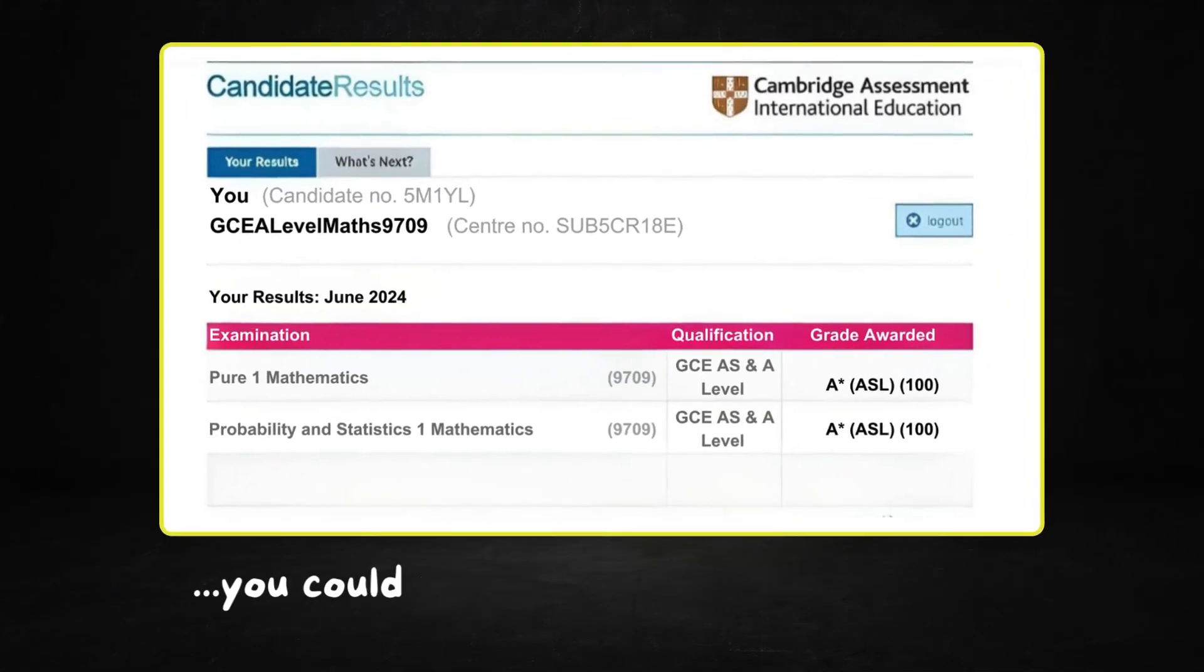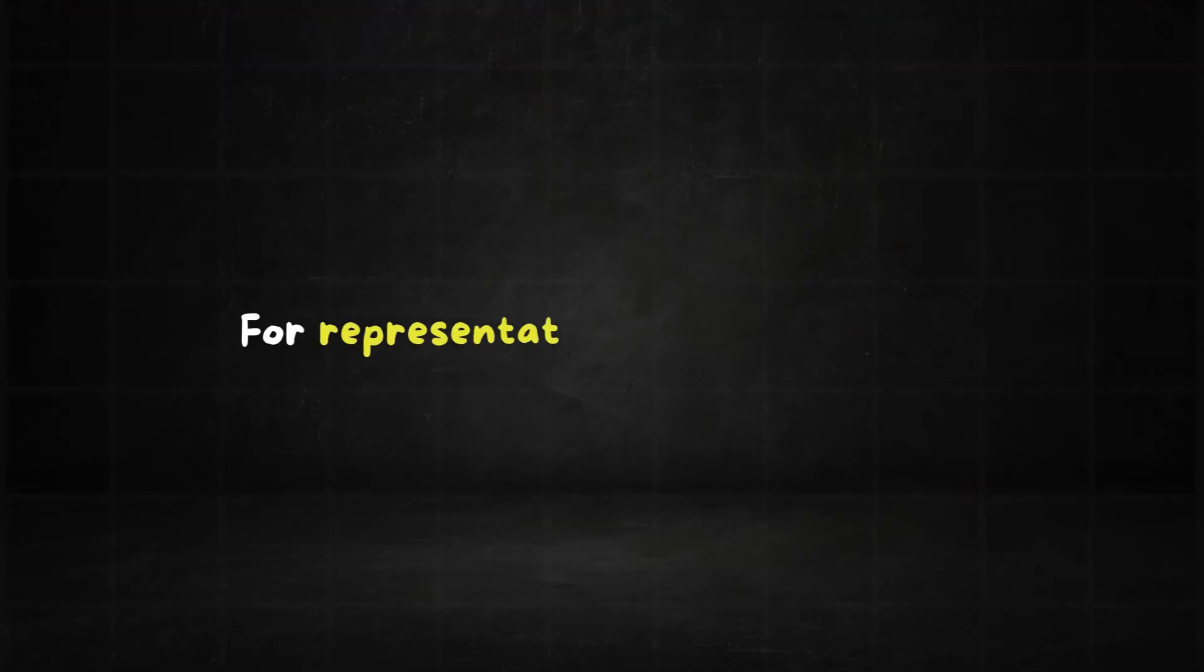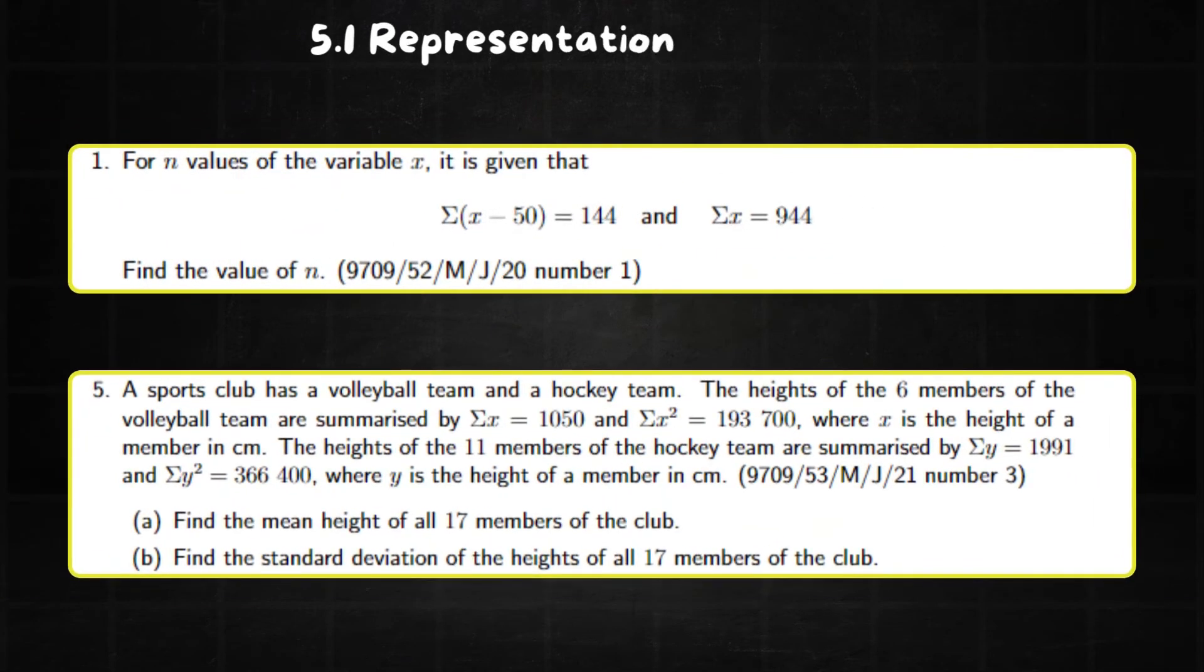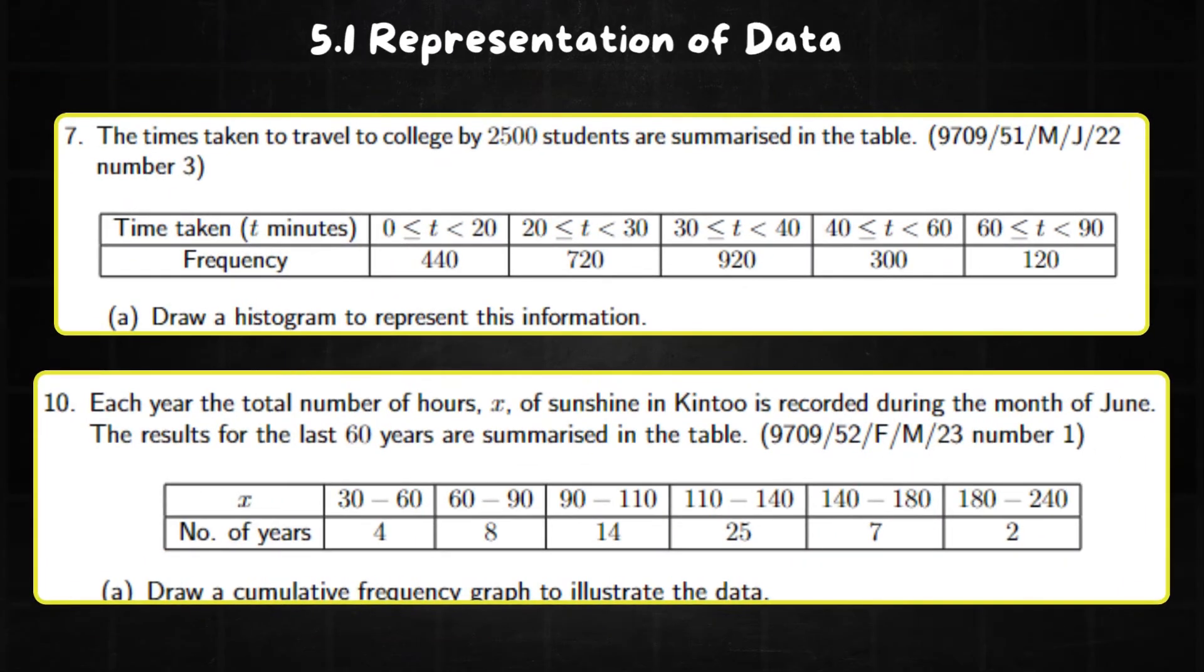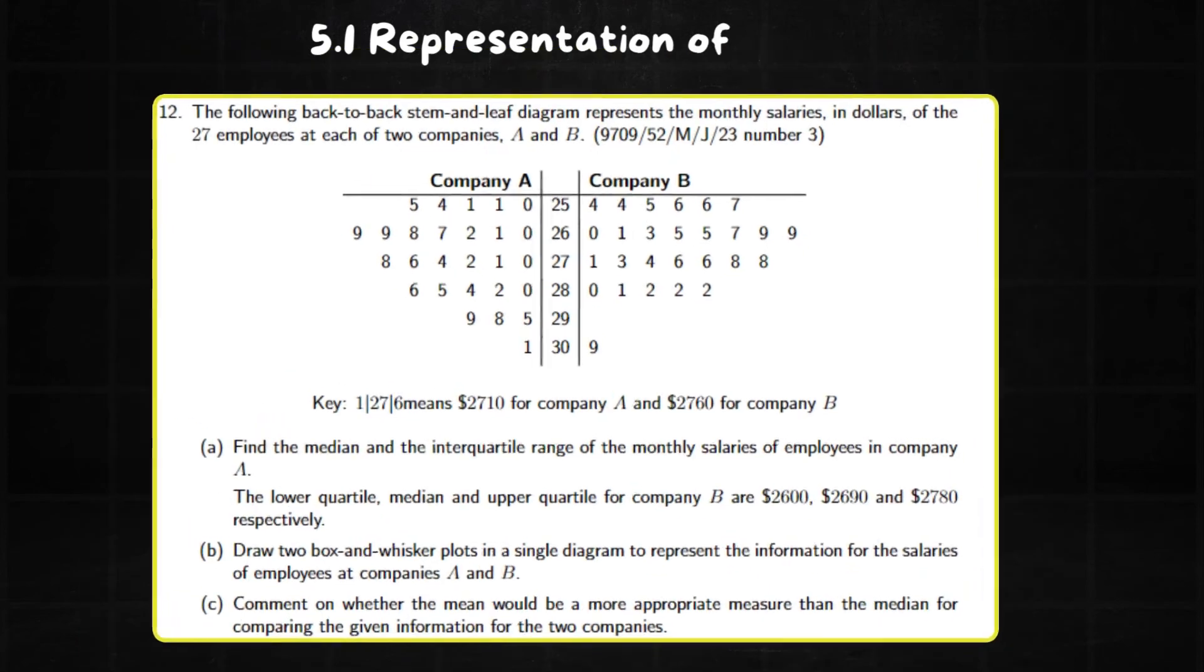For representation of data, we have coded data, mean and standard deviation, both grouped and ungrouped, and then drawing one of the histogram, cumulative frequency graphs, stem and leaf diagram, or box and whisker plot.